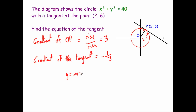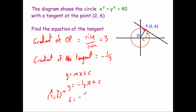Now let's find the equation of the tangent. The equation of a straight line is y = mx + c. We know the gradient m = minus one third, so it's y = −⅓x + c. We also know the point P (2, 6) lies on the line, so we substitute x = 2 and y = 6: six equals minus one third times two plus c.